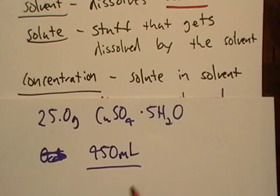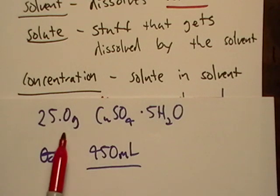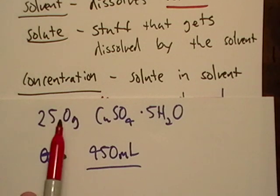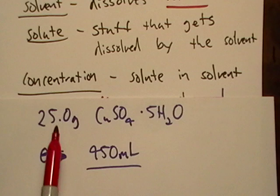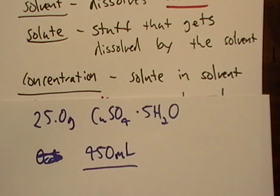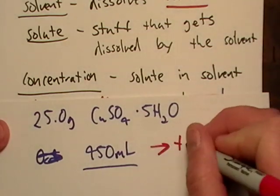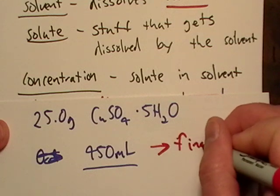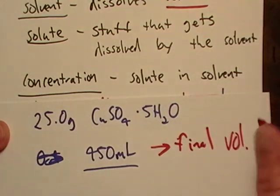Because at the end of the day, what are we trying to do? We want the concentration of a particular volume. So of course, that particular volume of solution has got to have the solute in it. So don't try to separate this. Don't convert this to milliliters and then add it to the 450. We're not doing this. This is our final volume.